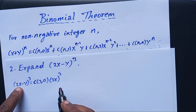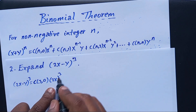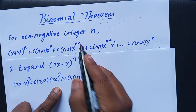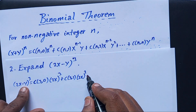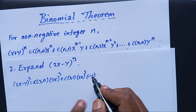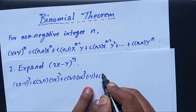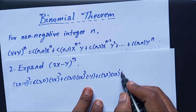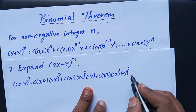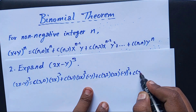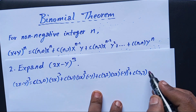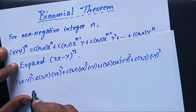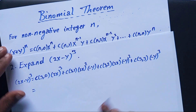Continuing the expansion: C(3,0)(2x)^3 + C(3,1)(2x)^2(-y) + C(3,2)(2x)^1(-y)^2 + C(3,3)(-y)^3. Take the second variable as negative y with its coefficient throughout.